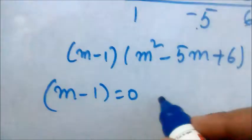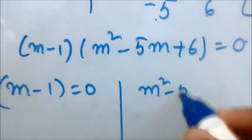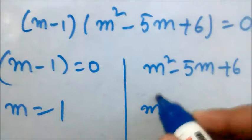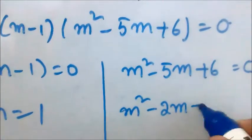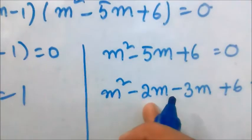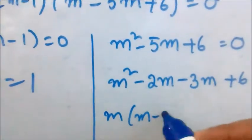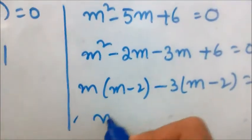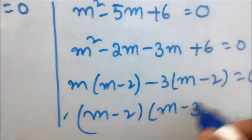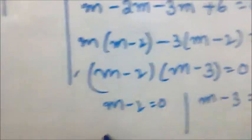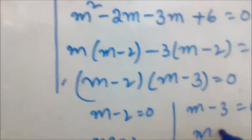So m - 1 = 0 gives m = 1. For m² - 5m + 6 = 0, we split -5m as -2m - 3m: m(m-2) - 3(m-2) = 0, so (m-2)(m-3) = 0. Therefore m = 2 and m = 3.